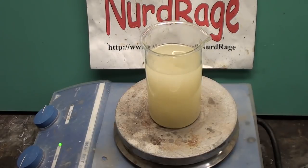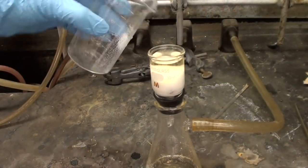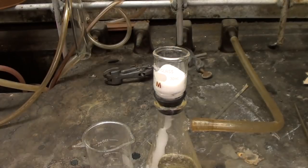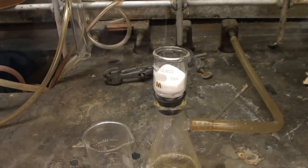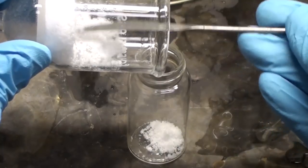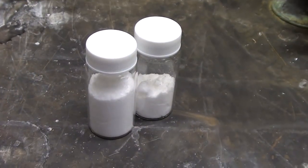Keep stirring until the solution cools down to room temperature on its own. This takes about an hour or so. Vacuum filter out the hydrazine sulfate and pull air through it for about an hour to dry it on the frit. Transfer hydrazine sulfate to a container and there you have it, pure hydrazine sulfate.